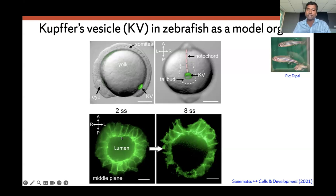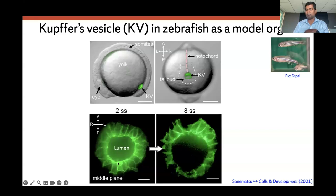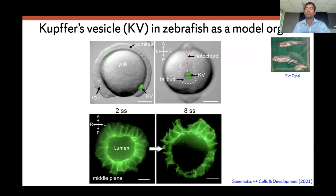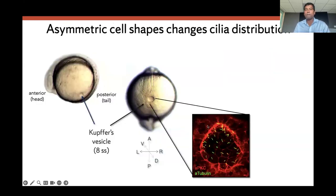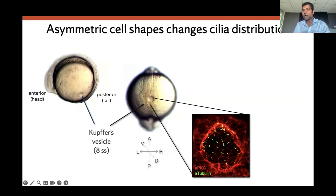What we notice is that at early somite stages, the Kupffer's vesicle is perfectly spherically symmetric — a single layer of epithelial cells — with an equal number of cells in the top and the bottom. But at later somite stages, there are more cells on the top and fewer cells on the bottom. Because of this asymmetric distribution of cells, the fluid-filled lumen inside the Kupffer's vesicle also has a distorted cilia distribution. Every cell has a cilium pointing toward this fluid-filled lumen, and because of the anterior-posterior asymmetry, there are more cilia on the top than the bottom.